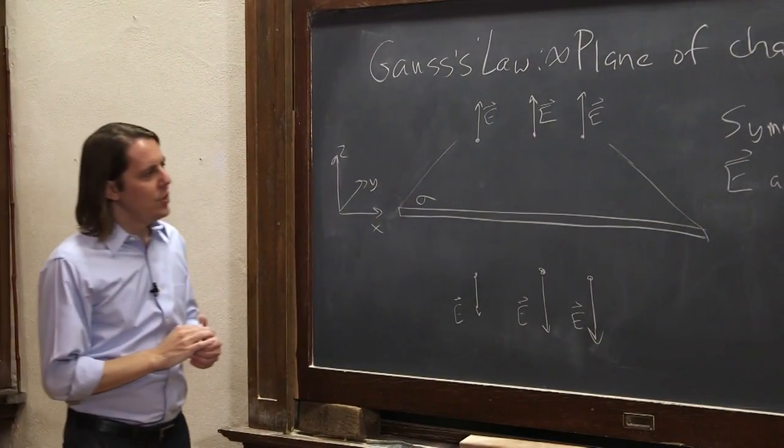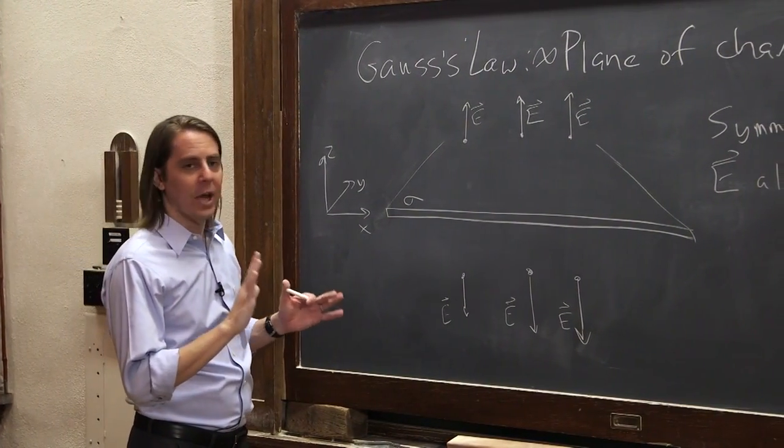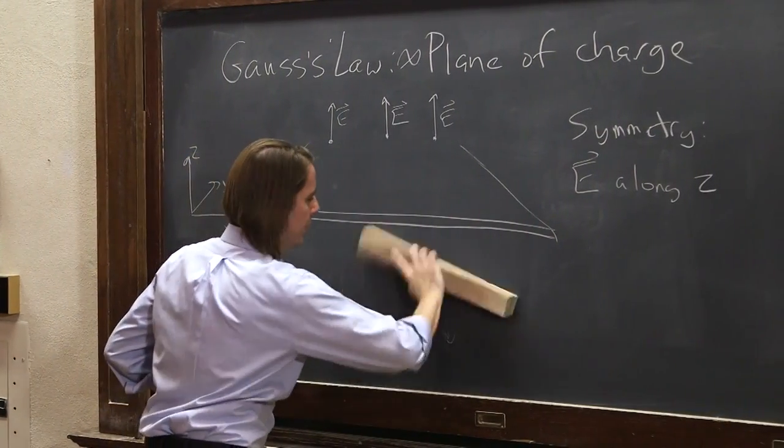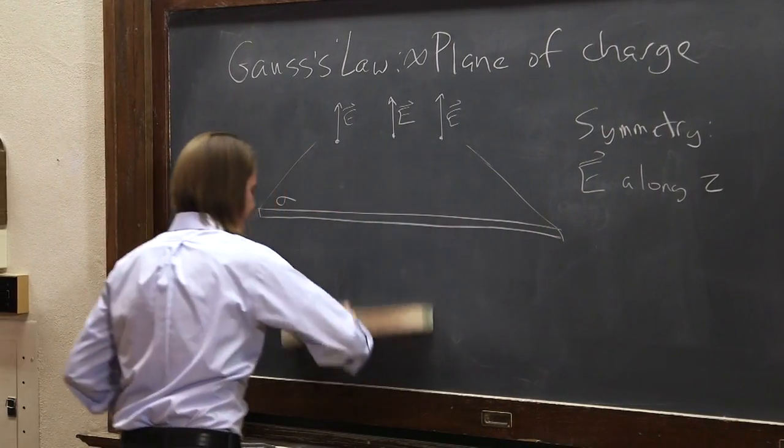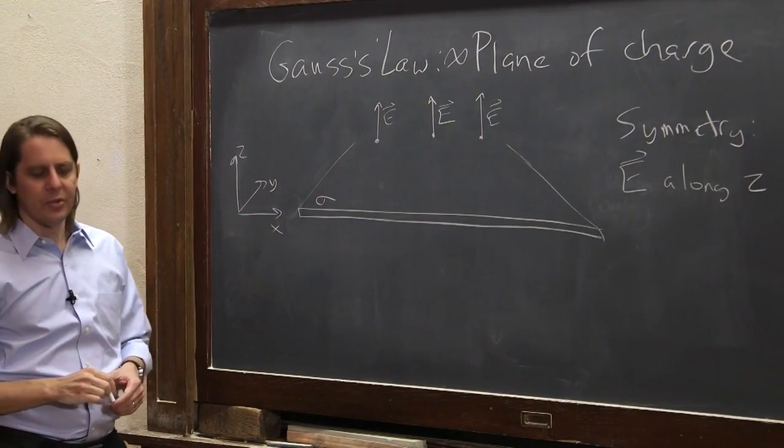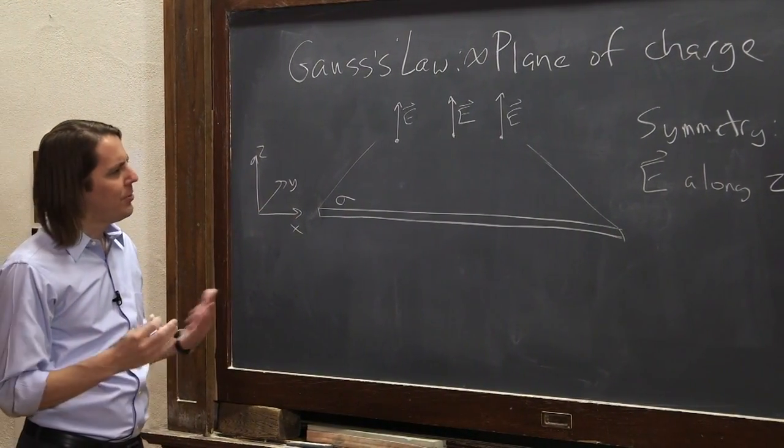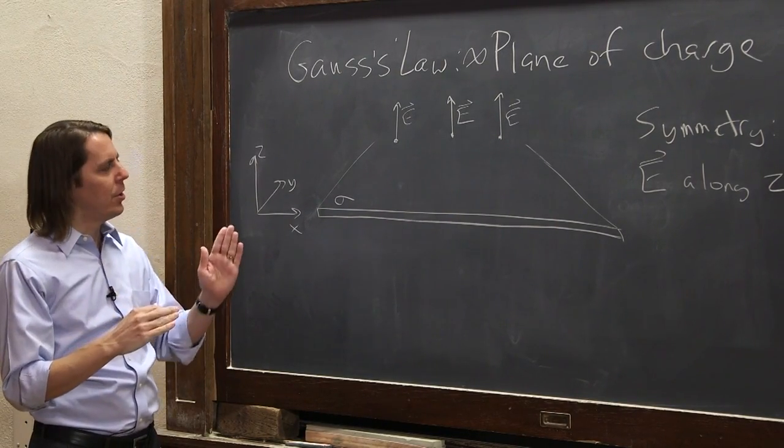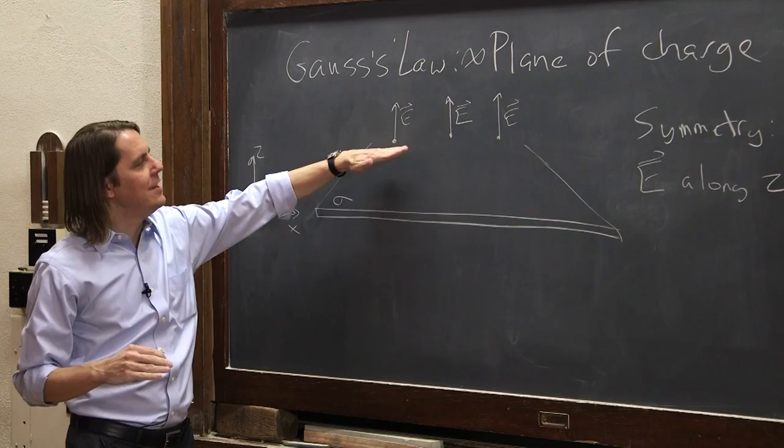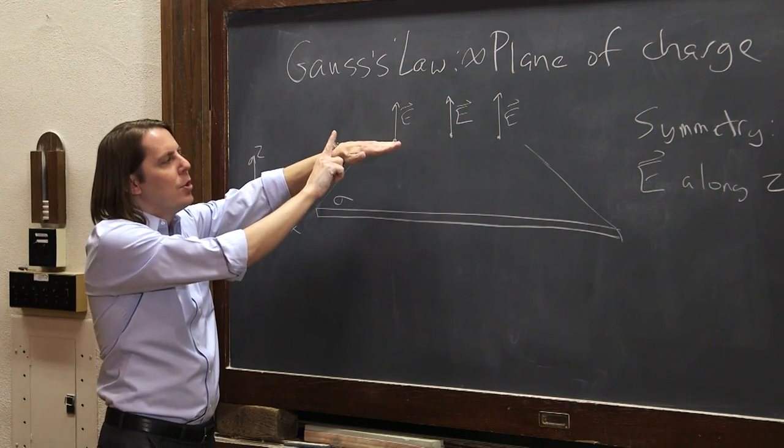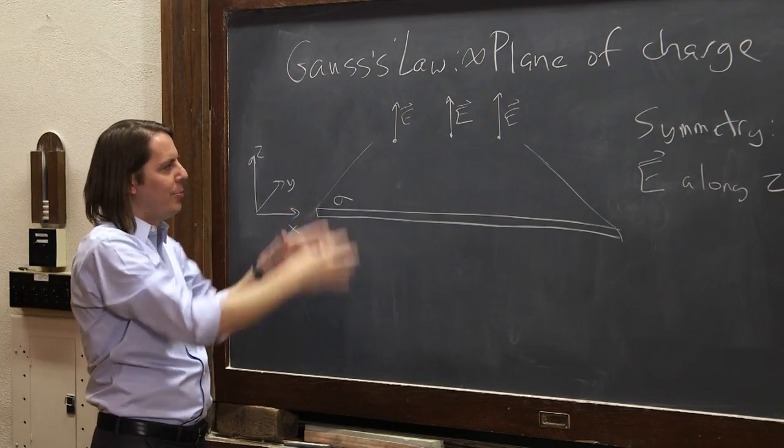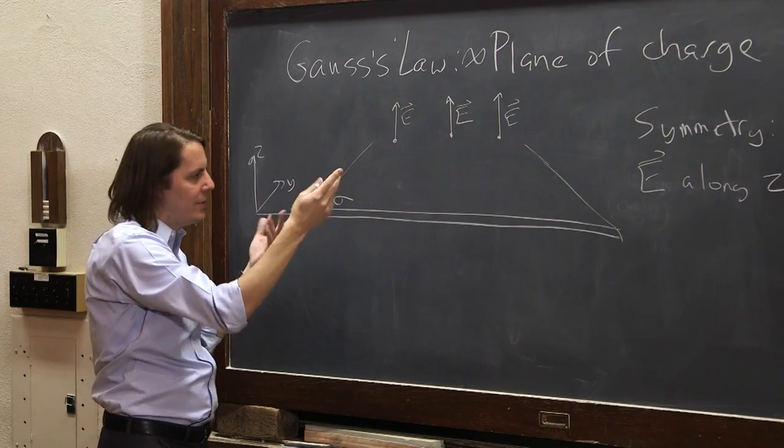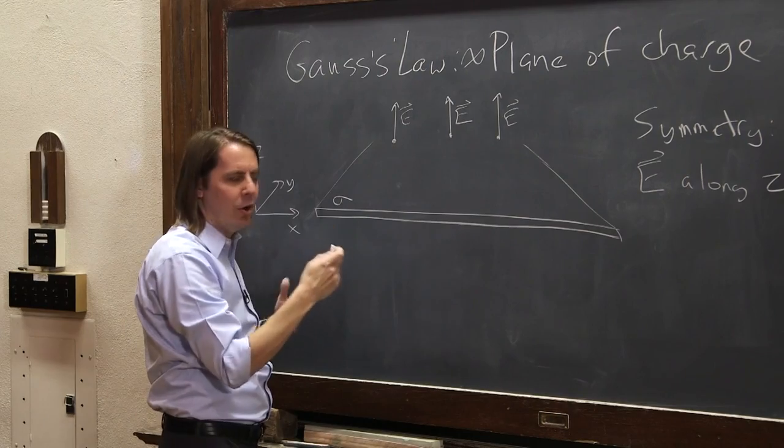So now that you know that, you need to pick your Gaussian surface. So let me erase some of this stuff here. So you actually have two choices for your Gaussian surface, and you want to think in terms of symmetry. What do you want? You want faces on the surface that are either perpendicular to the E field, so that their area vector will be along the E field, or you want faces that are parallel to the E field, so that their area vector will be perpendicular to the E field. That's the two main things you want in a Gaussian surface.